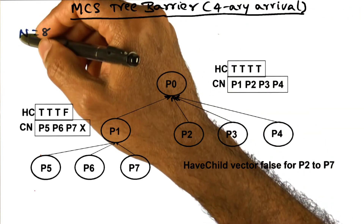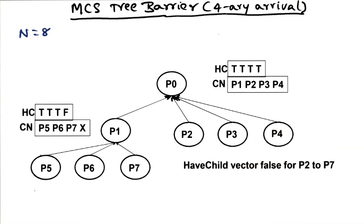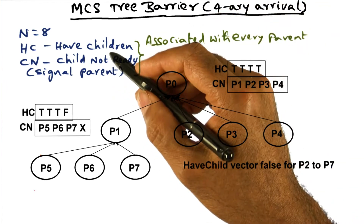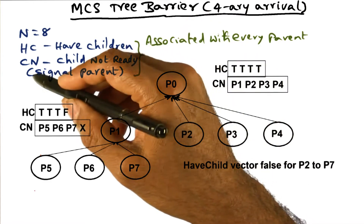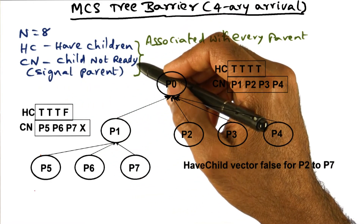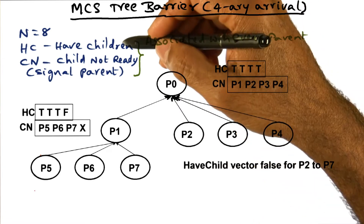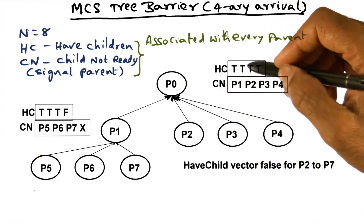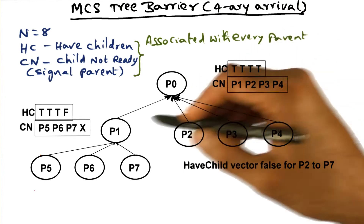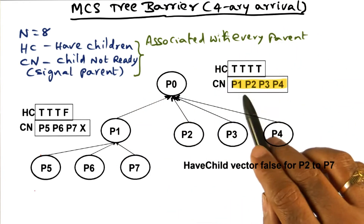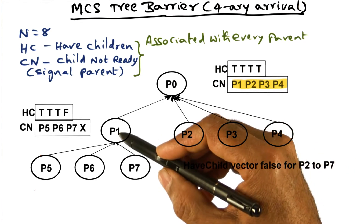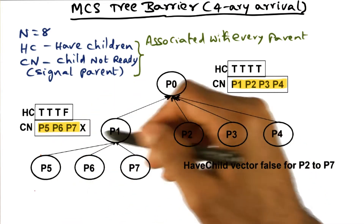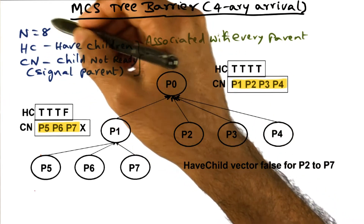The arrival tree is a four-ary tree, and I'm showing the arrangement for n equal to eight. There are two data structures associated with every parent. One is called 'have children' and the other is called 'child not ready.' Node P0 has four children: P1, P2, P3, and P4. Node P1 has three children: P5, P6, and P7. So we have a total of eight processors accounted for.